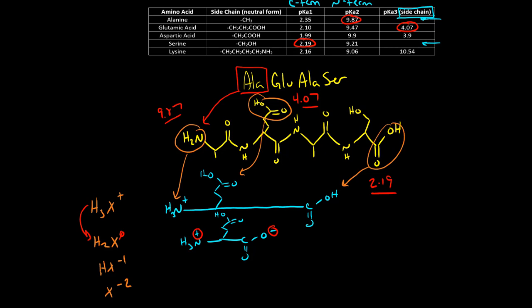When we draw the HX form, the next proton that gets removed is the side chain of glutamic acid because it has the next most acidic pKa. So we draw this out, the N-terminus is still protonated, the C-terminus is still deprotonated, and now the side chain of glutamic acid is also deprotonated. So I have a negative 1 charge from the C-terminus, a plus 1 charge from the N-terminus, and a negative 1 charge on my side chain. So the charge of negative 1 overall makes sense.